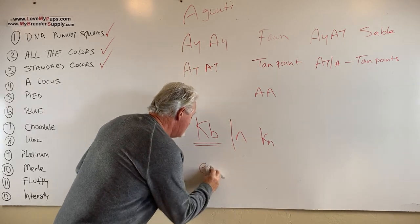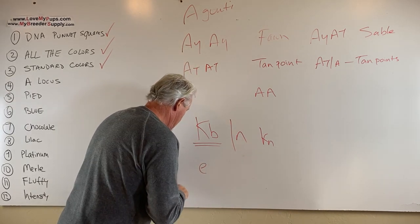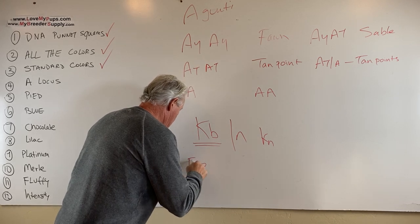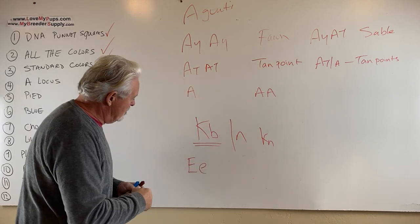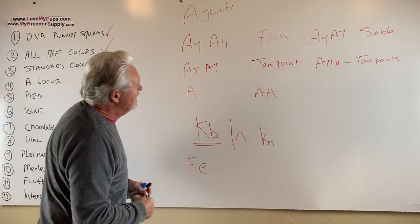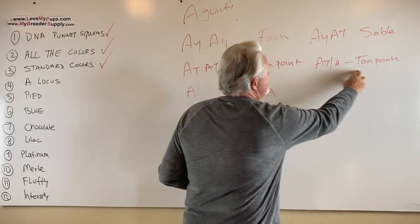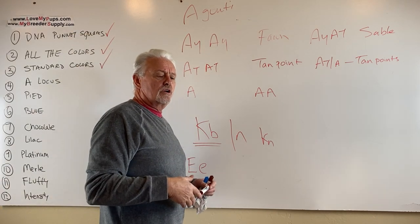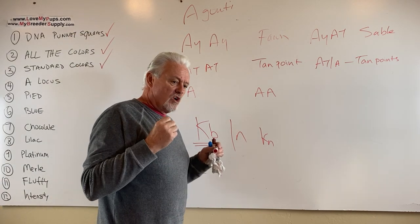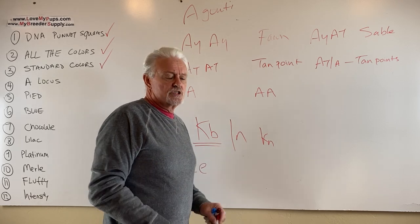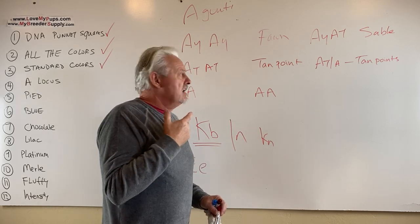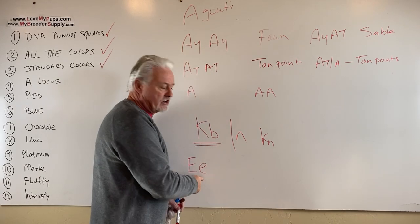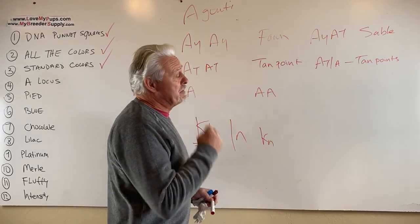And interestingly, if you have a dog that has a single copy of cream, so that would be a dog that is not cream but has one copy of the recessive cream gene, it makes the tan points show up brighter. So if you see a dog that's like a blue and tan, or a chocolate and tan, or a lilac and tan, and it's got really white tan points on its legs, on its face, then there's a good chance it's carrying a single copy of cream, which makes it pop much better.